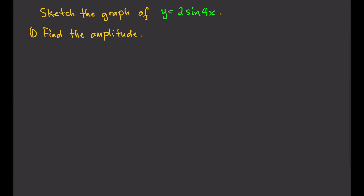The amplitude is the number in front of the sine or cosine function. In this case, that's 2, but technically that's supposed to be the absolute value of that number. Sometimes we can have negative values there, so the absolute value of the number in front of sine or cosine. So, that's going to be the absolute value of 2, and that's equal to 2. So, this is the amplitude.